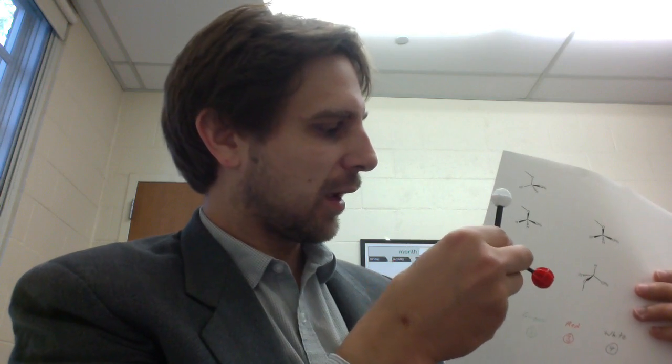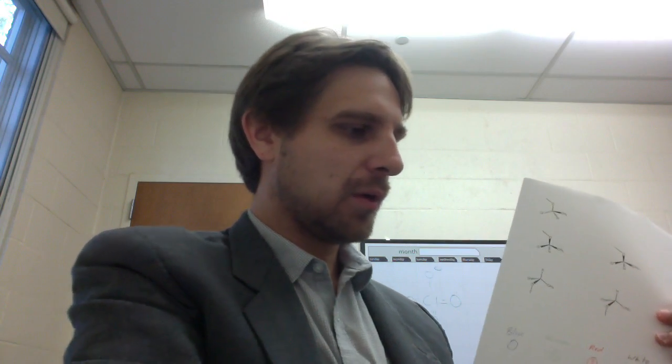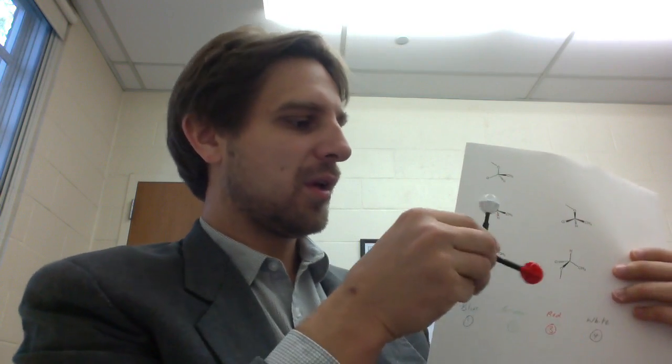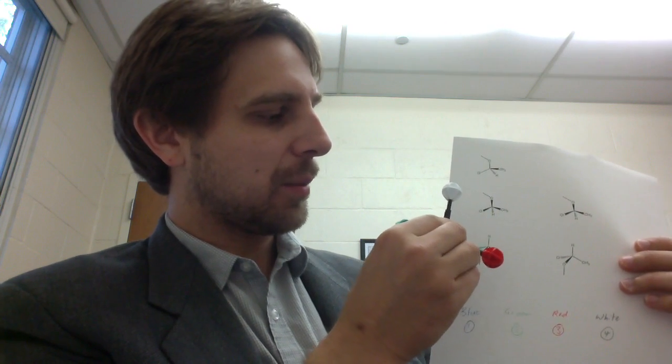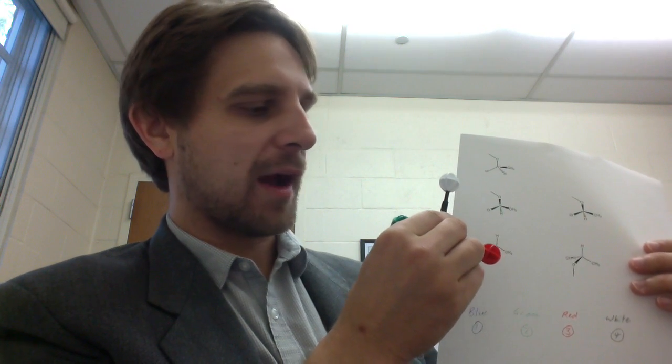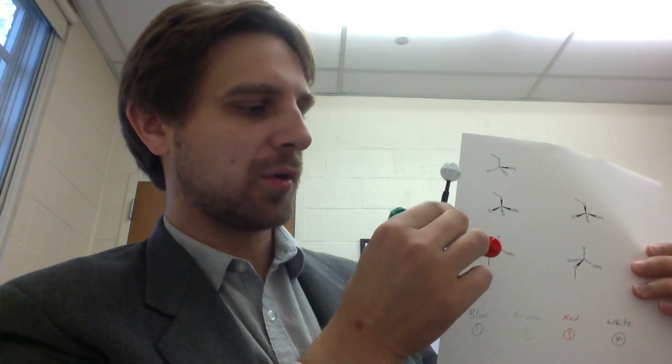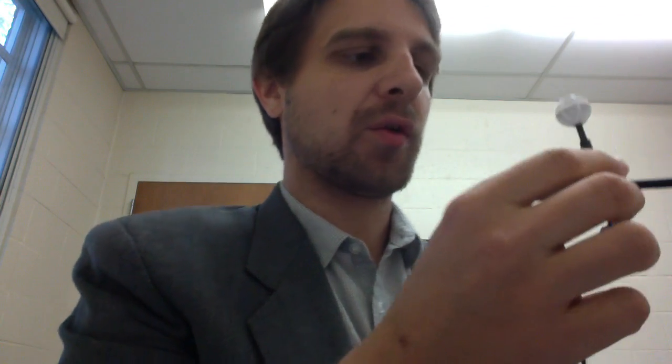So what we need to do is we can either build our model and line it up. We would see that, for instance, this one here, hydrogen lining up here, oxygen out of the page, that's our priority two group, chlorine into the page, that's our lowest priority group.